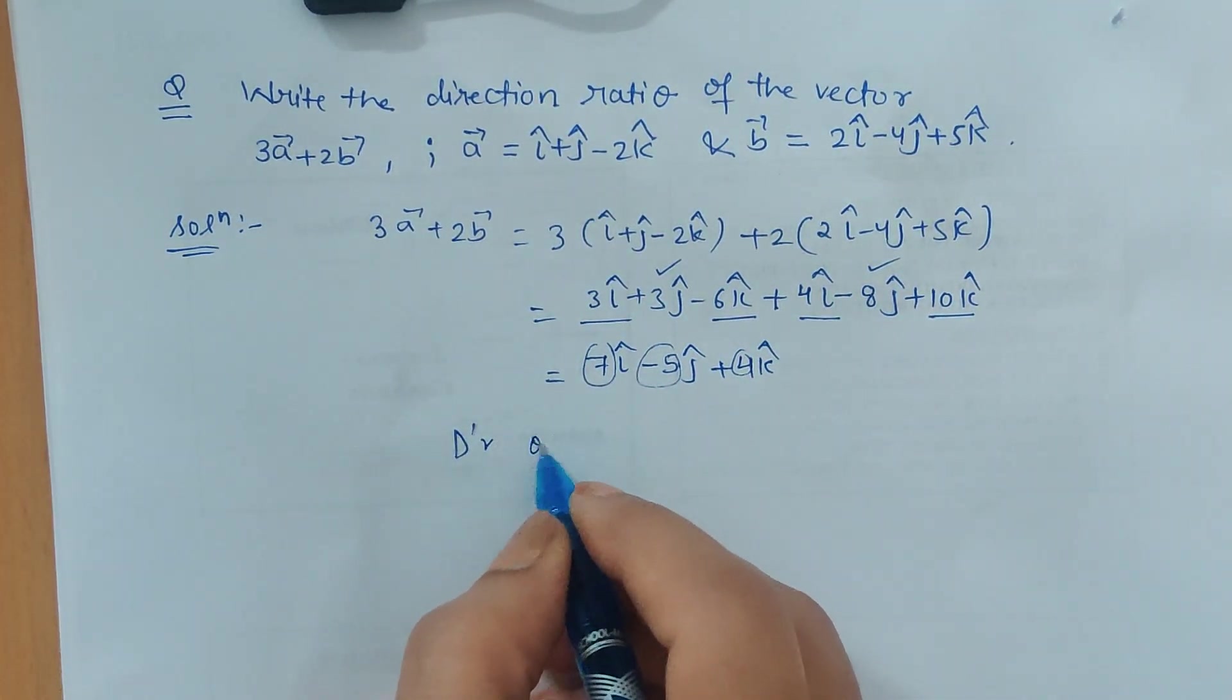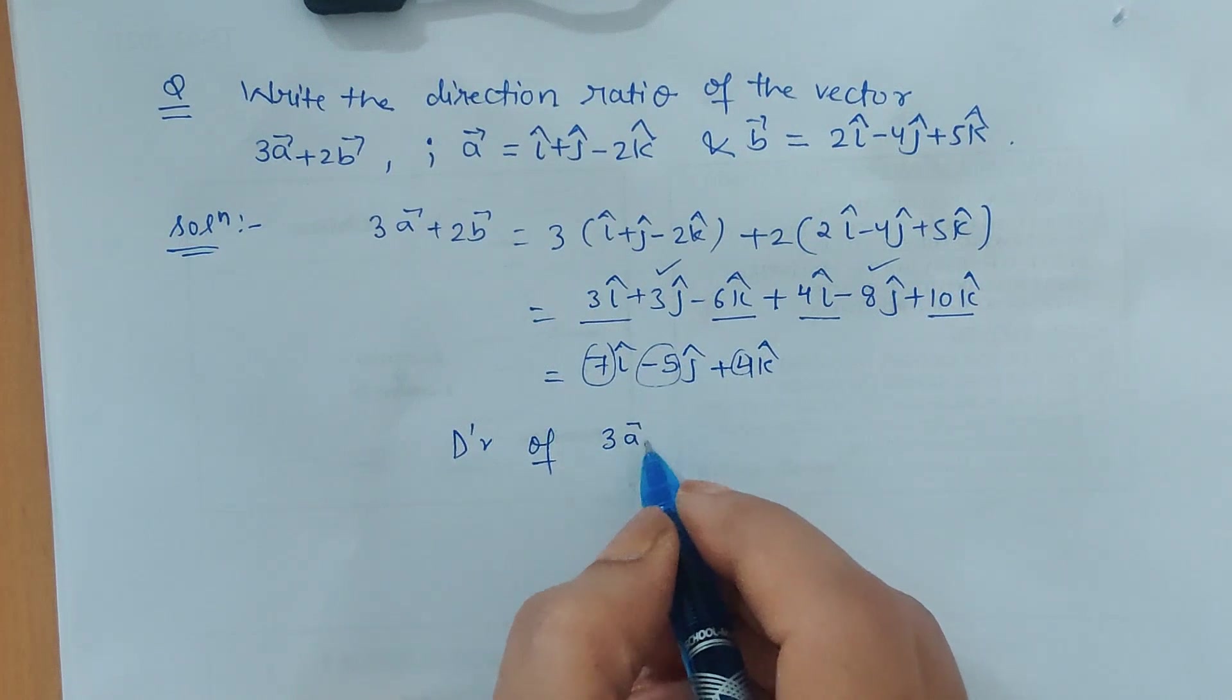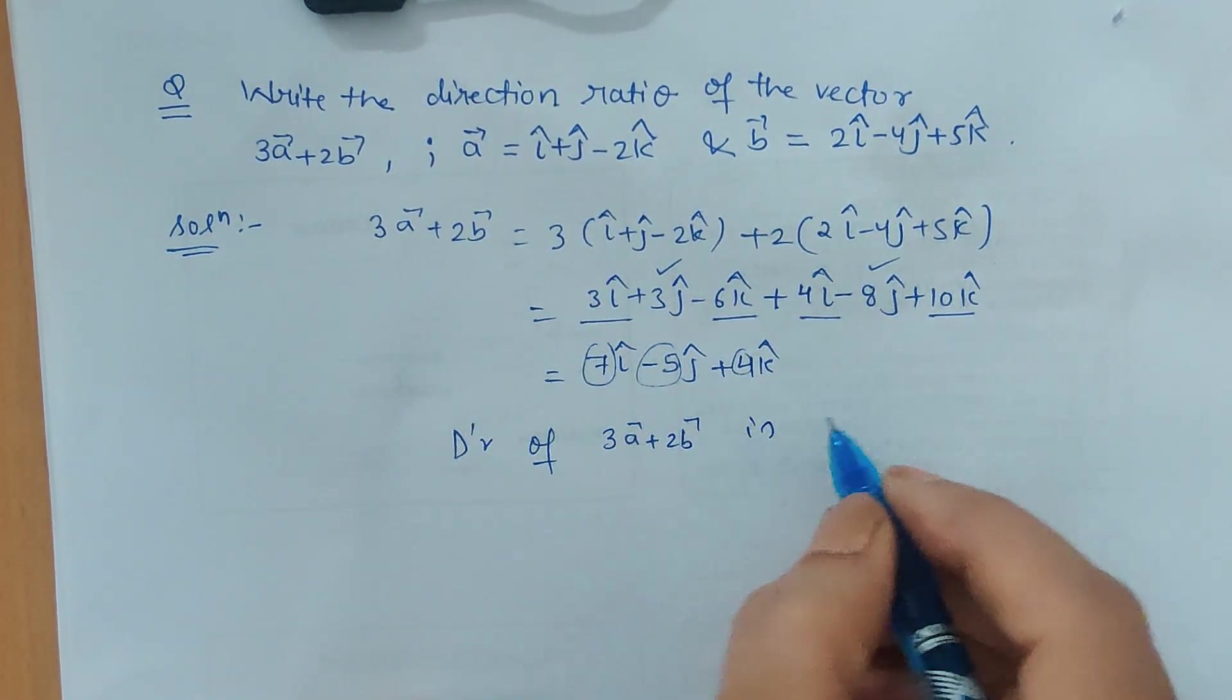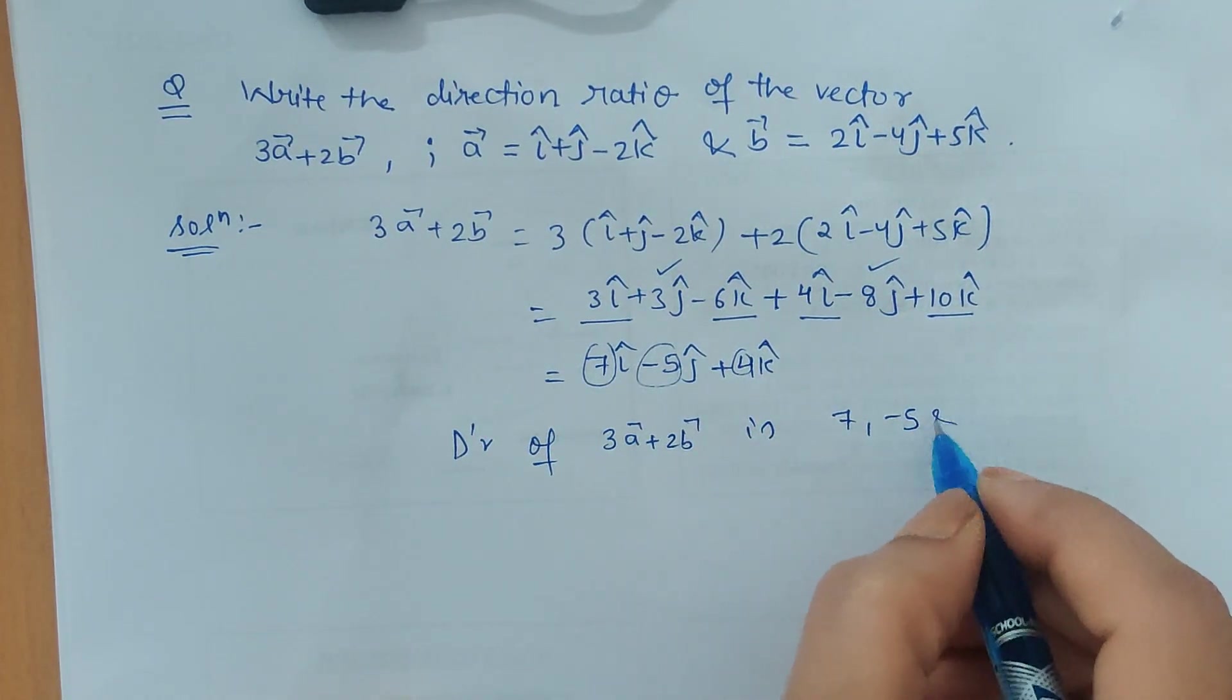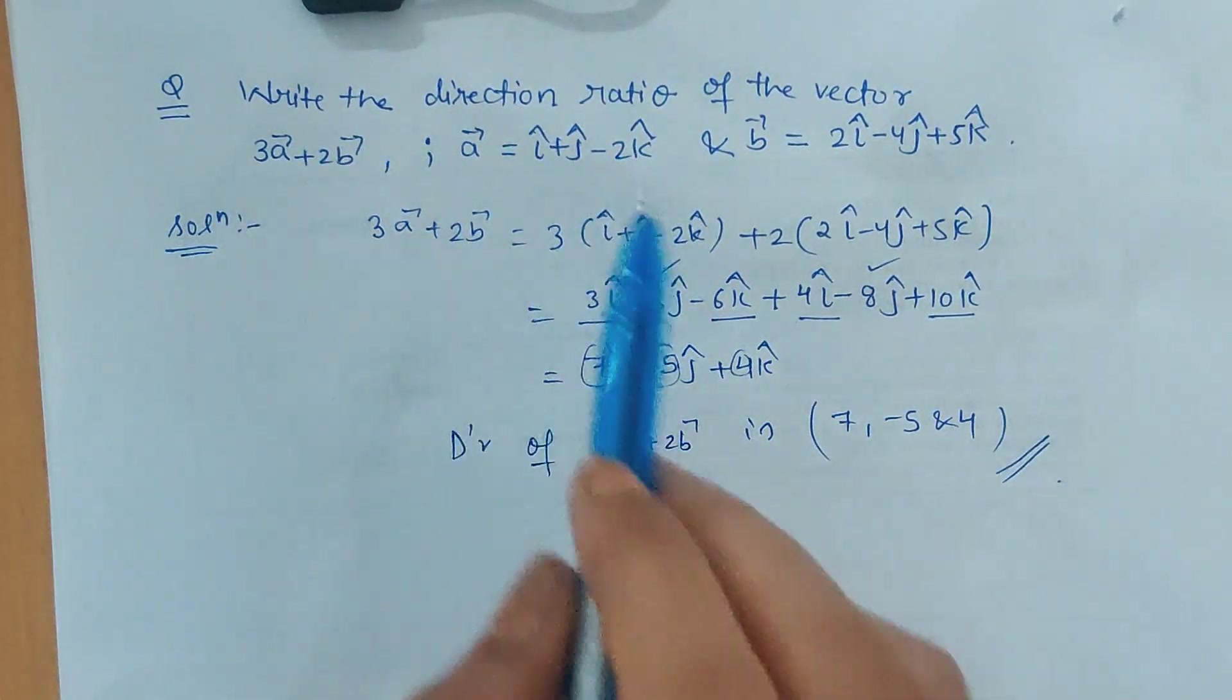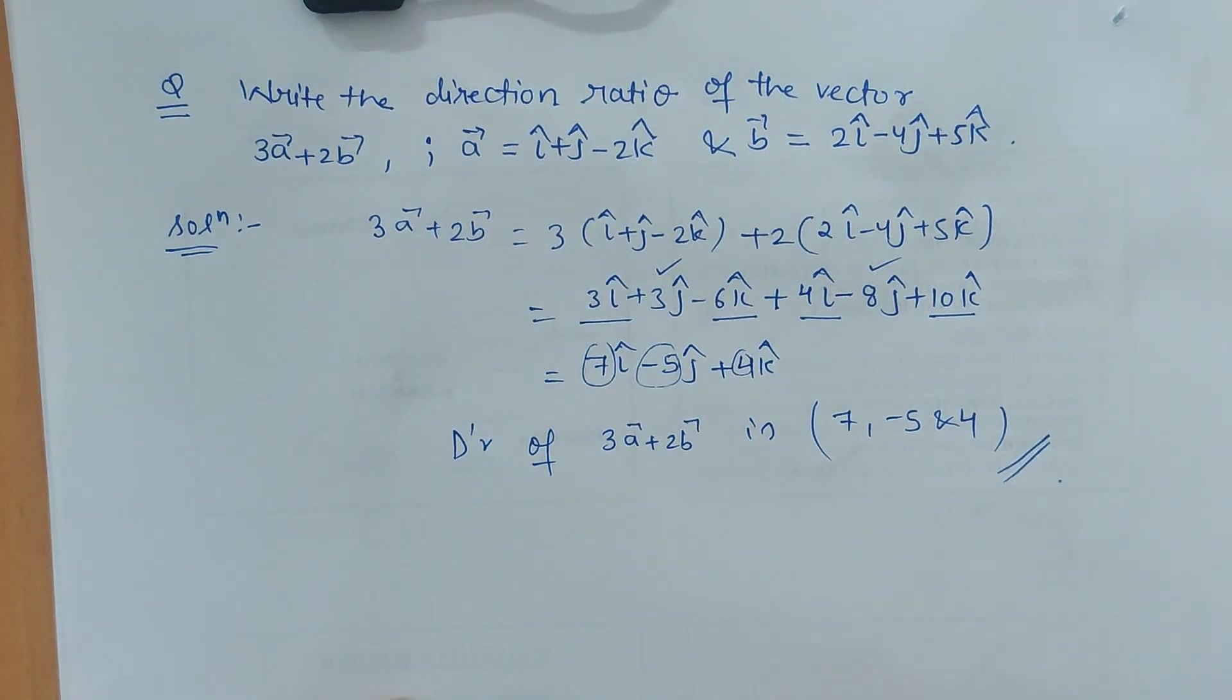I just concluded the direction ratio of 3a + 2b is 7, minus 5, and 4. This is the direction ratio of the said vector. Thank you.